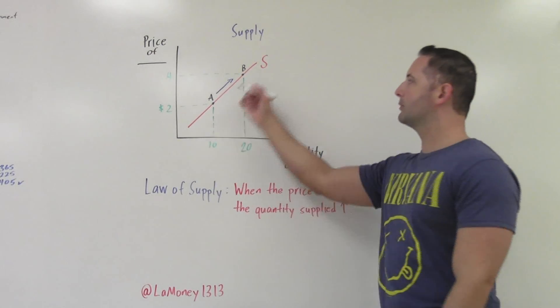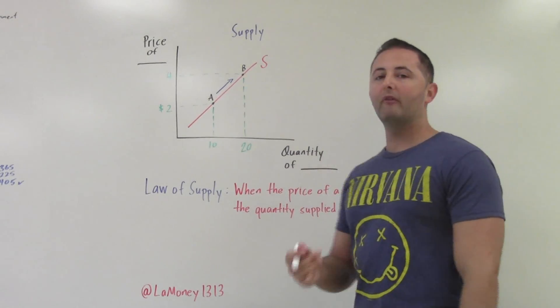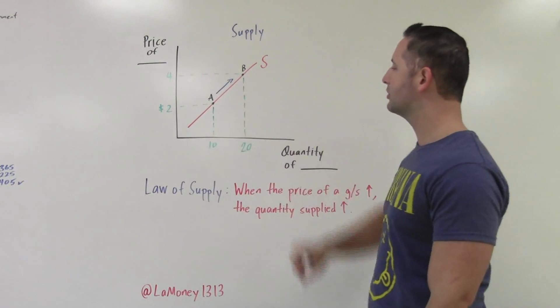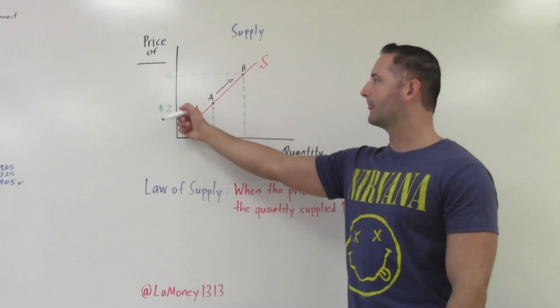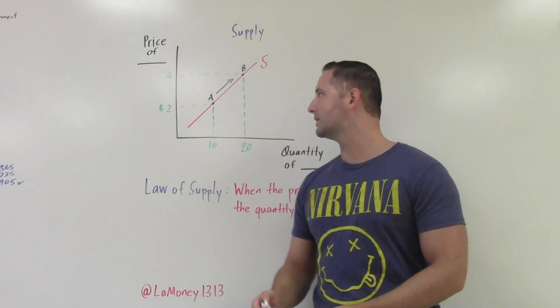In this case, an upward movement, just like an upward movement on the demand curve, is showing a price increase. However, the main difference is this time the price increase leads to an increase in the quantity supplied. So at point A, the price is only $2, and we're willing to supply 10 of this particular good.